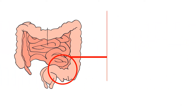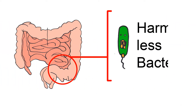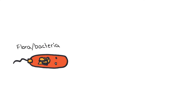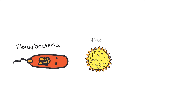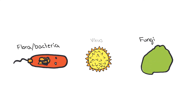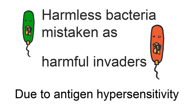The GI tract normally contains harmless bacteria which aid in digestion and are protected from immune attacks. The immune system usually attacks and kills foreign invaders such as bacteria, viruses, fungi, and other microorganisms. In people with Crohn's, the harmless bacteria are mistaken for harmful invaders due to antigen hypersensitivity.